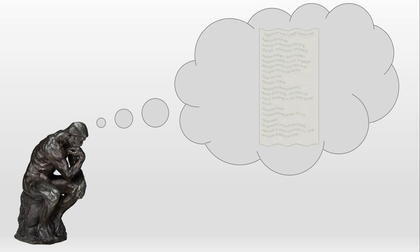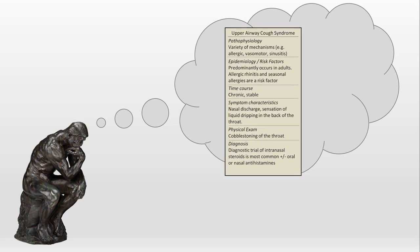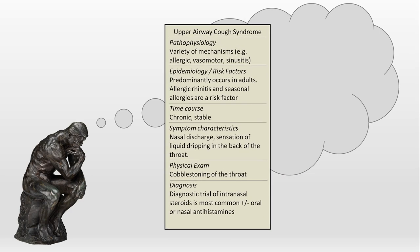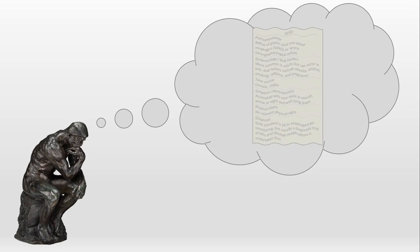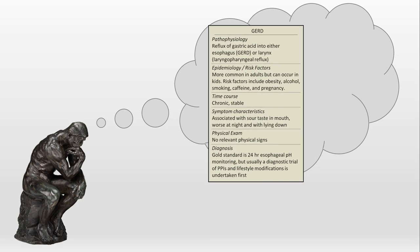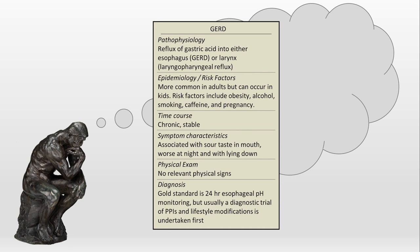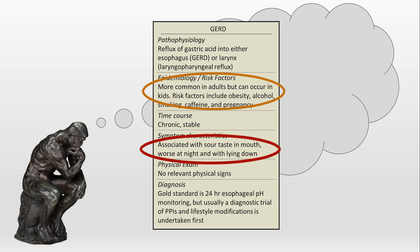For example, you might think about upper airway cough syndrome, commonly referred to as post-nasal drip. This is a common diagnosis but predominantly occurs in adults, not 7-year-olds, has nasal discharge which Sam is not reporting, and is associated with physical exam findings we don't see here. Next, you could consider GERD, another common cause of chronic cough. On that illness script, it's typically seen in adults but can also be seen in kids; however, it's associated with a sour taste in the mouth, is worse at night and with lying down — none of which Sam describes — and isn't associated with wheezing. So while this script matches Sam's case a little better than the previous one, it's still not great.